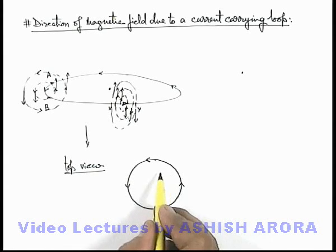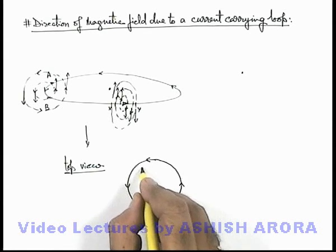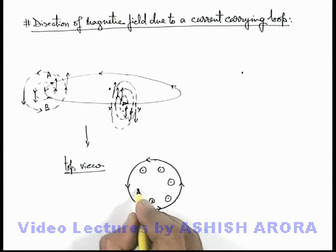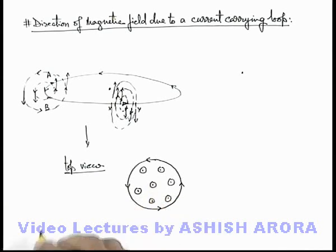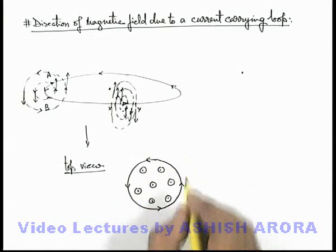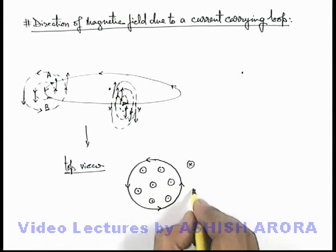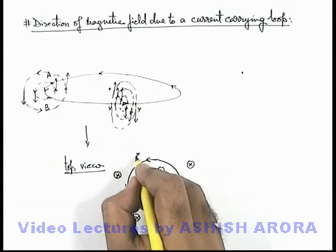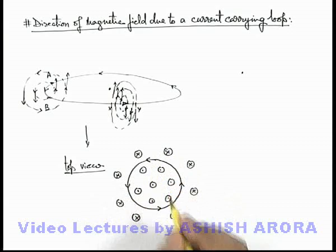Then due to this at every interior point the magnetic field will be in outward direction so we can draw the direction by a dot in a circle. And in the outside region magnetic field will be denoted by a cross in a circle because the magnetic field is in inward direction or into the plane of paper.